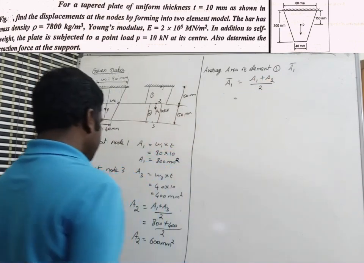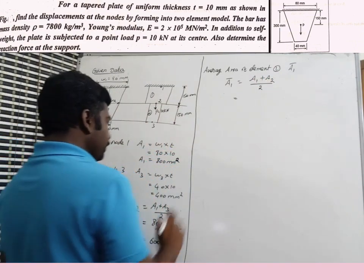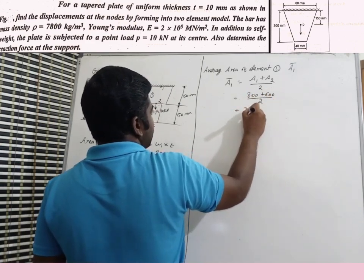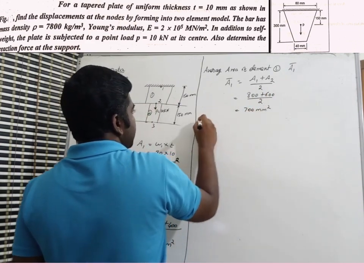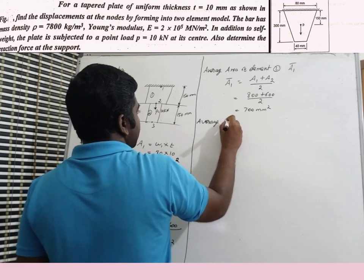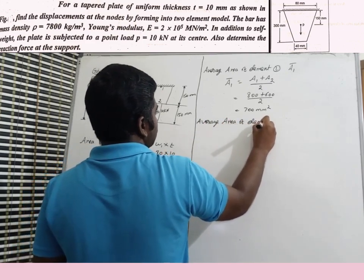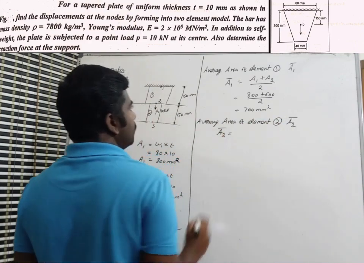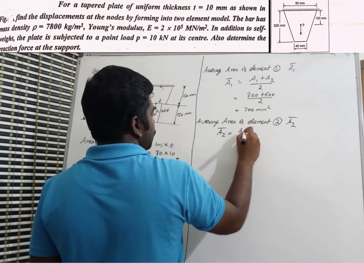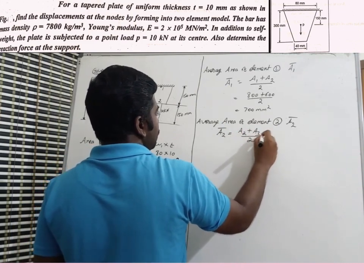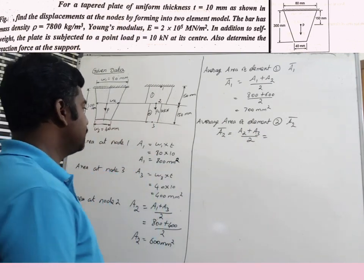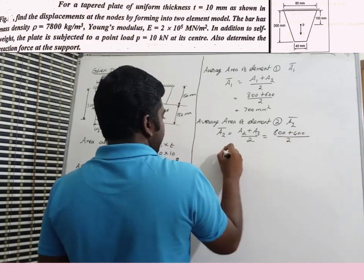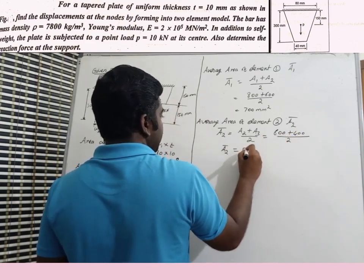Average area of element 1: A1_bar = (A1 + A2) / 2 = (800 + 600) / 2 = 700 mm². Average area of element 2: A2_bar = (A2 + A3) / 2 = (600 + 400) / 2 = 500 mm².